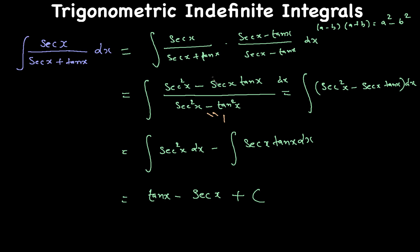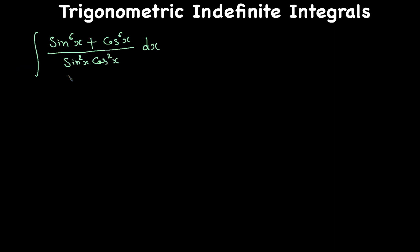Now let's do the second problem: the integral of (sin⁶x + cos⁶x) divided by sin²x times cos²x. My goal is to make it simpler. I'll use the identity a³ + b³ equals (a+b)³ minus 3ab(a+b).